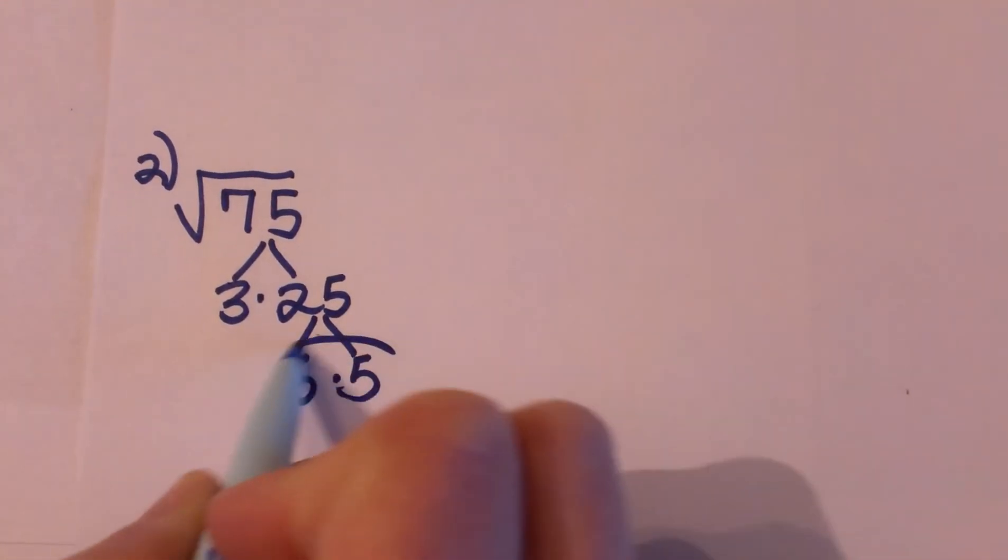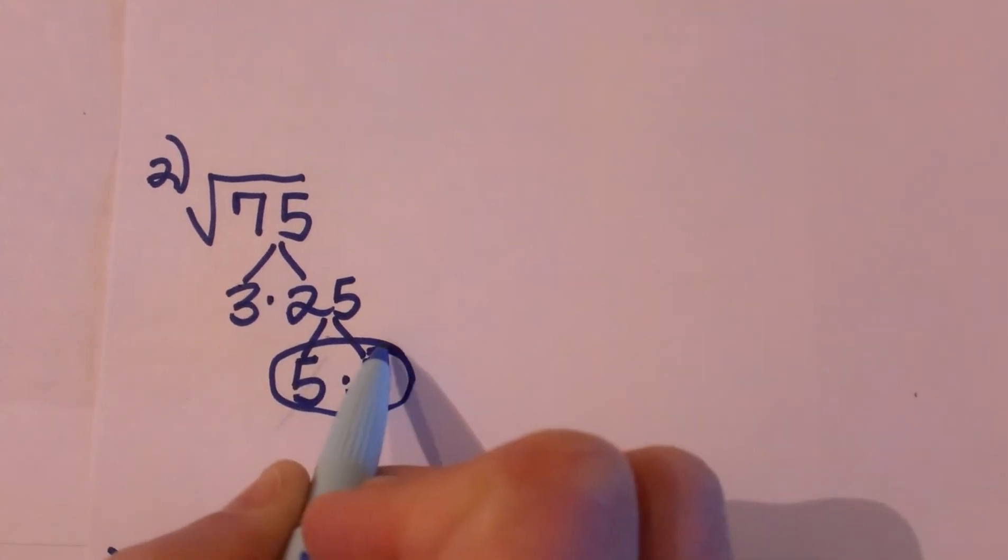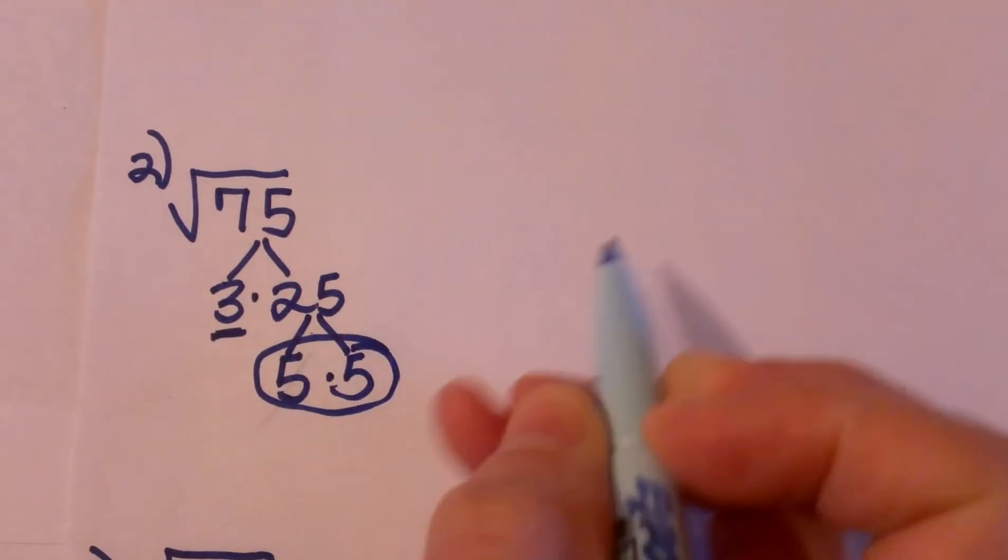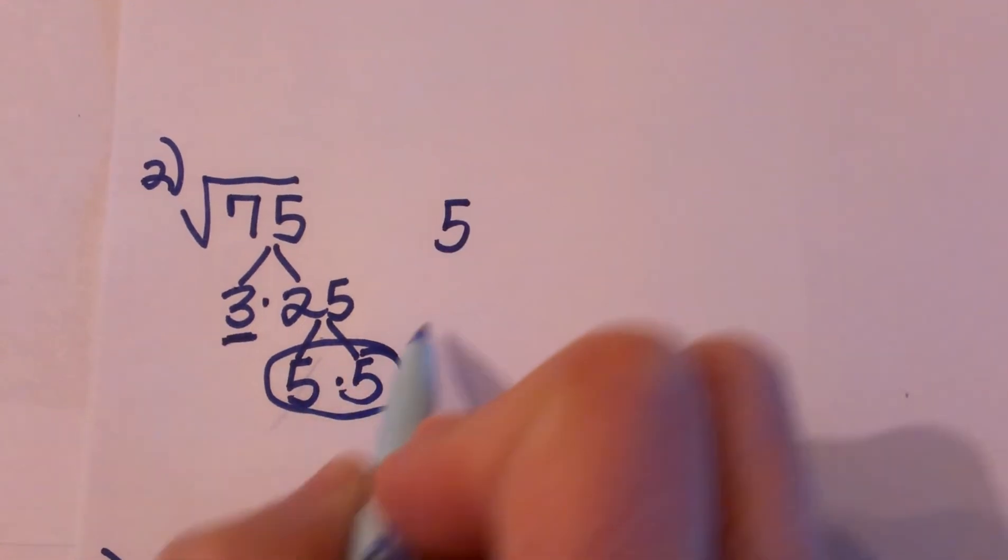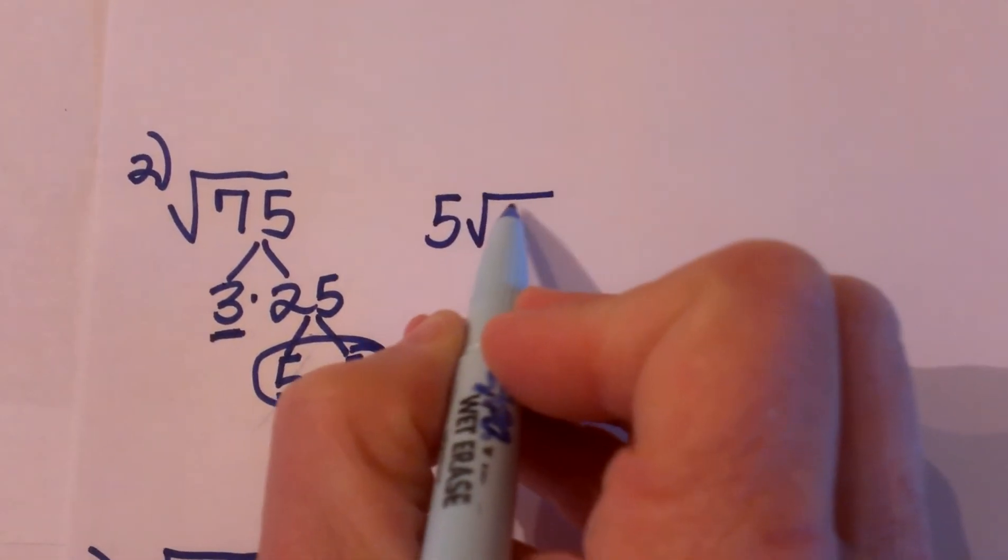5 times 5 so there is my pair. I can take the pair out of the radical but the 3 doesn't have a pair so it has to stay in the radical. So the answer is 5 square root of 3. Let's look at one more of these.